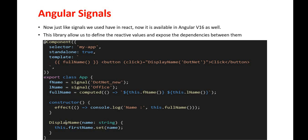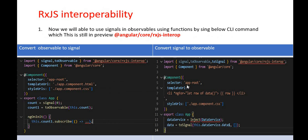Here you can see a signals example. We are going to print a full name using signals. We have taken two signals — firstName and lastName — and assigned them values. To print the full name, we are computing these values using the `computed` function. We have also defined an `effect`, which is basically a callback that executes every time any signal value changes. It reads the full name and using displayName we set and print that full name. This is how signals work.